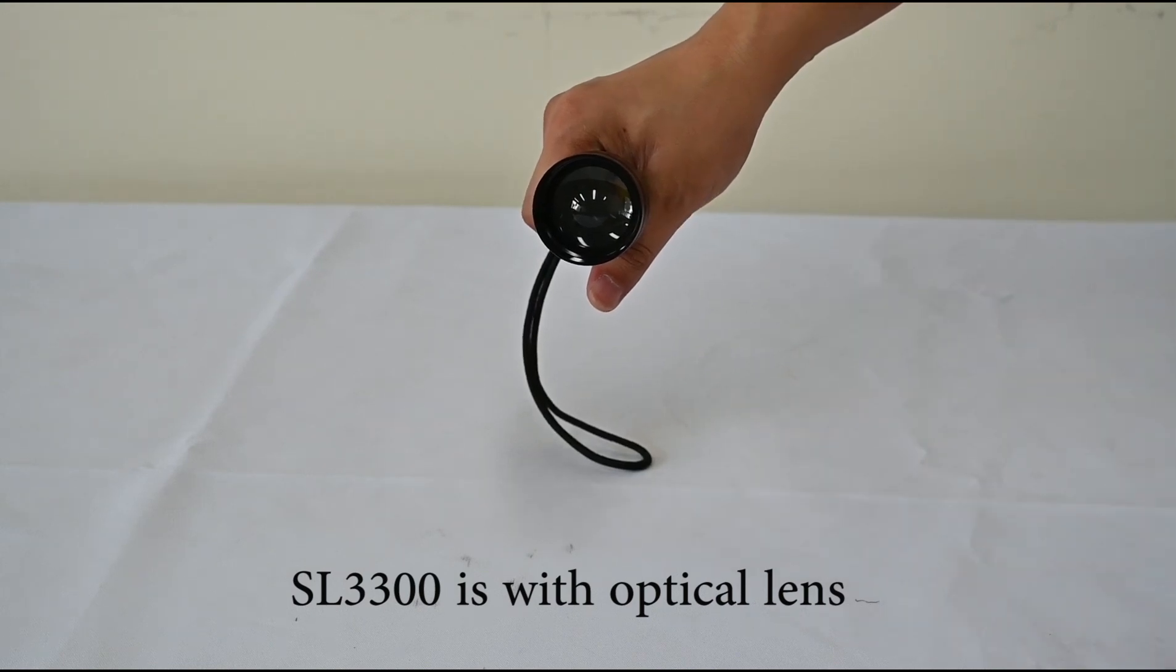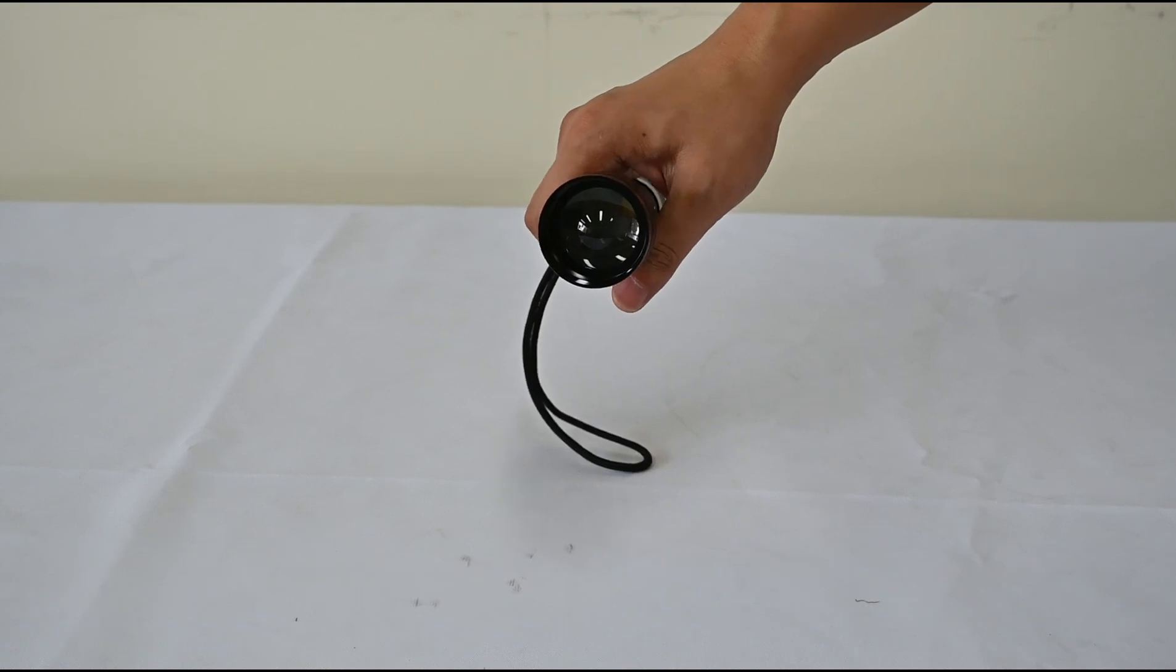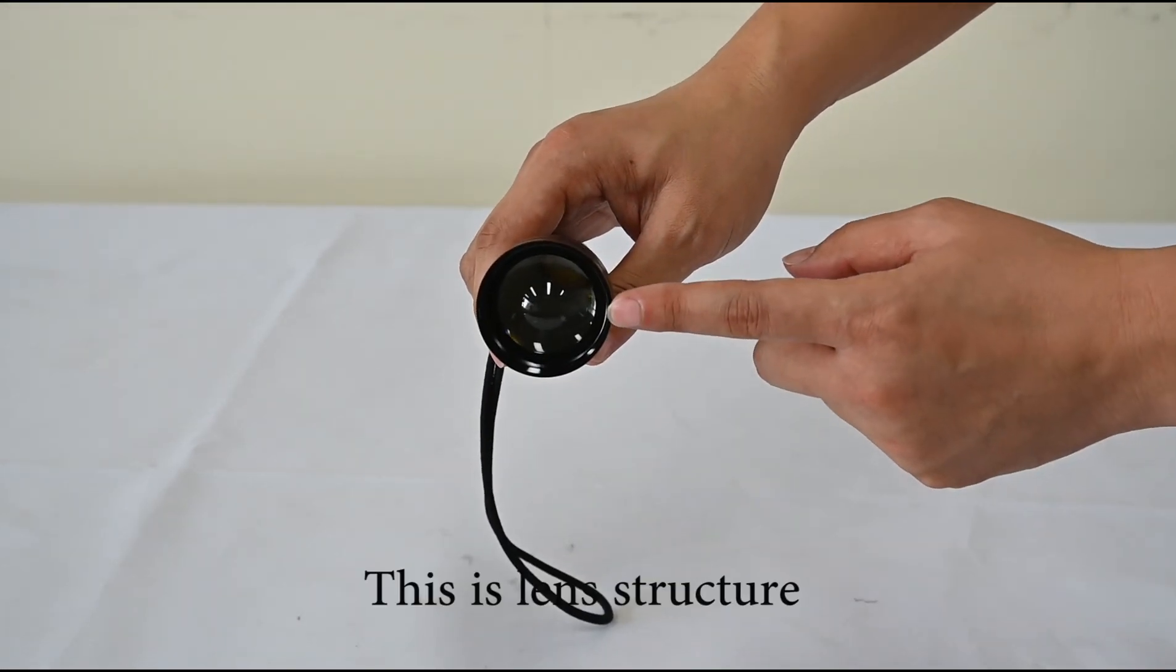SL3600 has an optical lens which is specially designed and developed by Sunlong. And this is the lens structure.